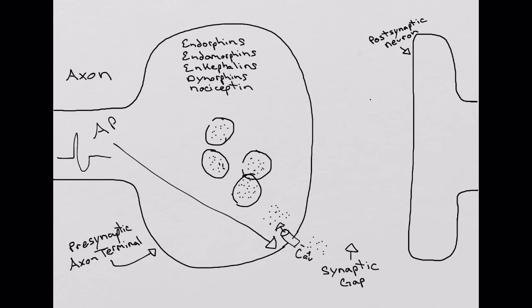And when that occurs, it causes these vesicles to basically fuse to the presynaptic axon terminal. And when that occurs, we have an exocytosis of our endogenous opioid into our synaptic gap.